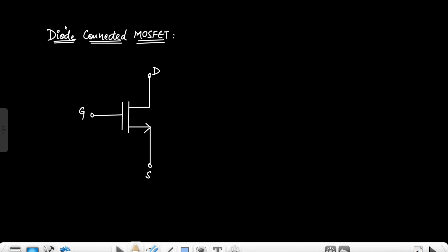When we say diode, it is going to be a two-terminal device, but as we know, a MOSFET is a three-terminal device — and in fact, to be more precise, a MOSFET is a four-terminal device if we consider the body terminal as well. But in general we don't consider the body terminal because it is short circuited with the source terminal to avoid the body effect.